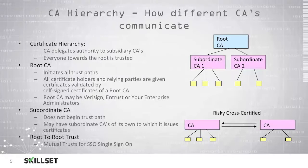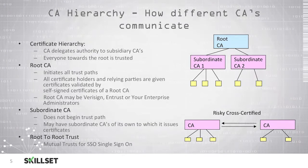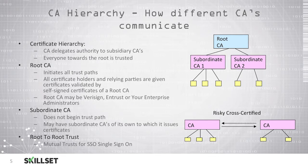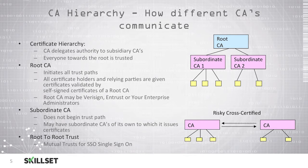Certificate authorities use a hierarchy where authority is delegated to subsidiary certificate authorities, and all certificate authorities towards the root are trusted as we move up the chain of trust. The root certificate authority is always at the top of the hierarchy and initiates all of the trust paths between the other certificate authorities.